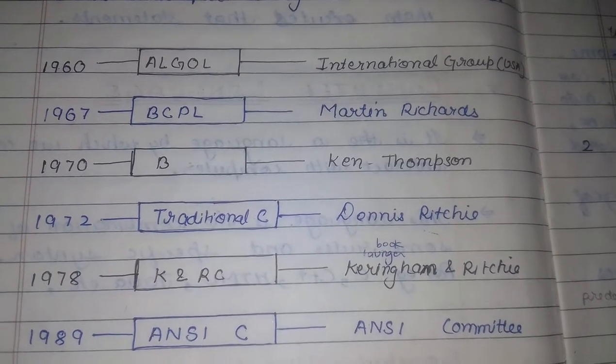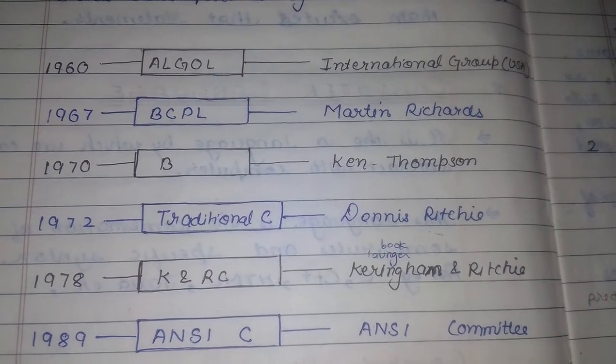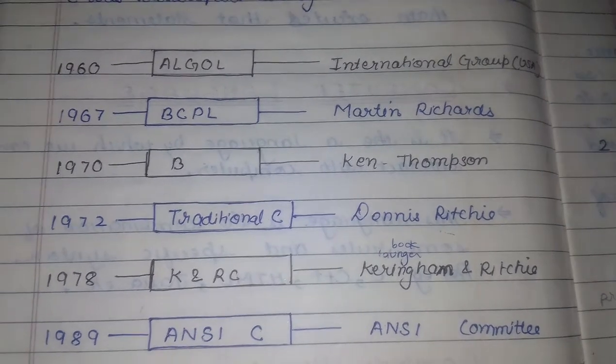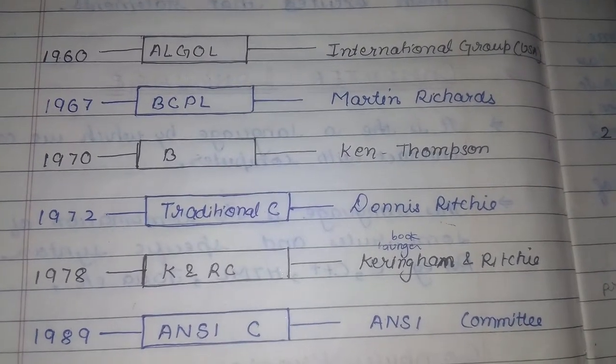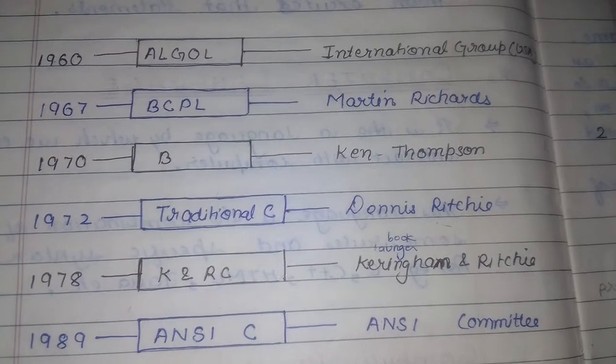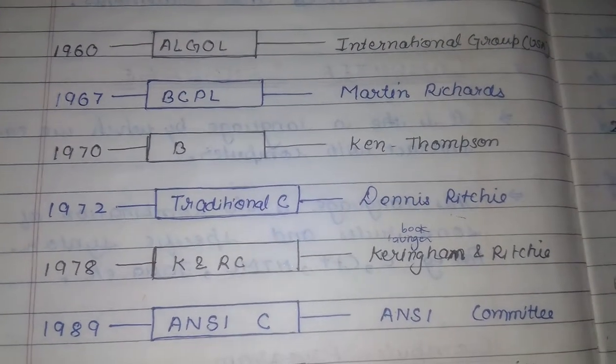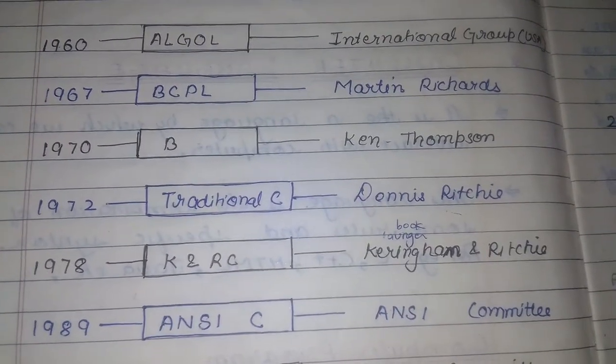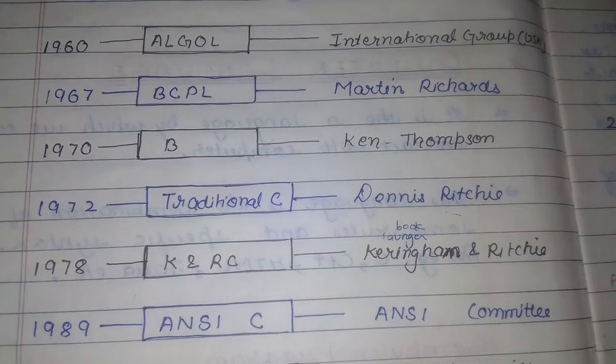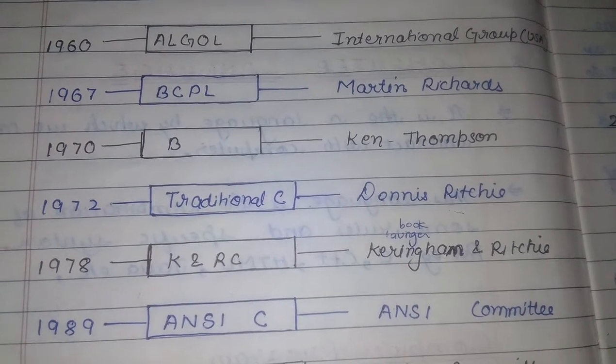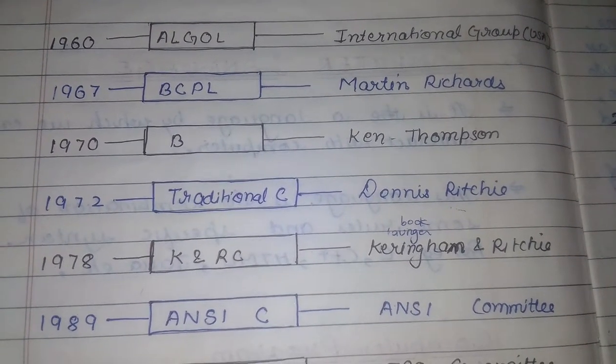In 1960, ALGOL by International Groups USA. In 1967, BCPL by Martin Richards. In 1970, B by Ken Thompson. In 1972, traditional C by Dennis Ritchie.